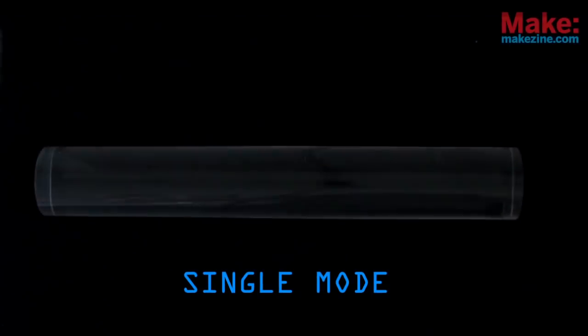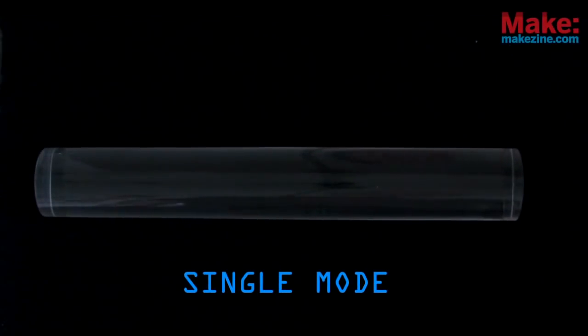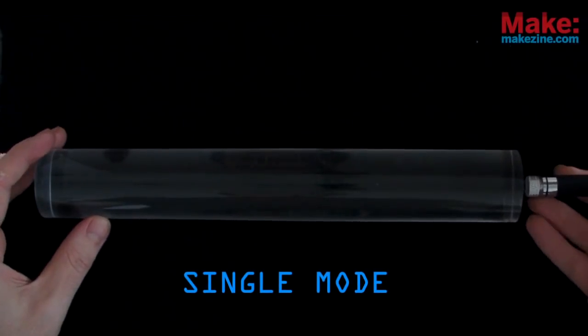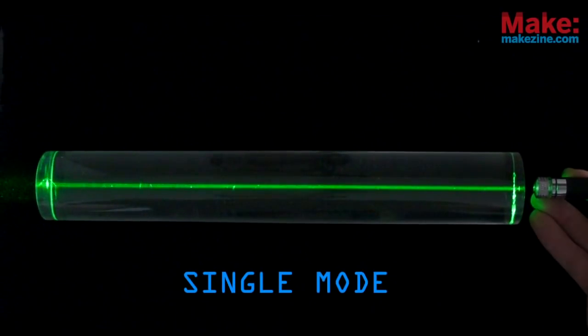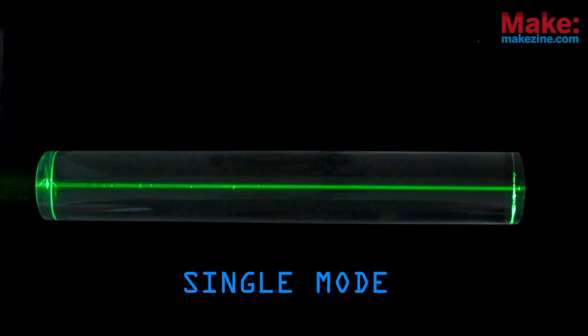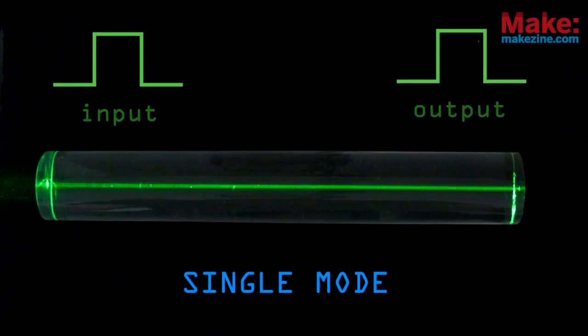When more precision is needed, single-mode fiber can be used. Single-mode only allows light to travel in a straight line. So all of the light arrives at the receiver at the same time. Which means the output matches the input exactly.